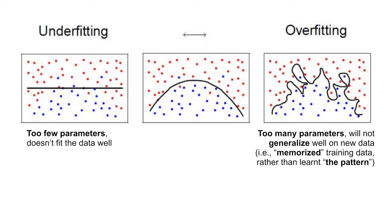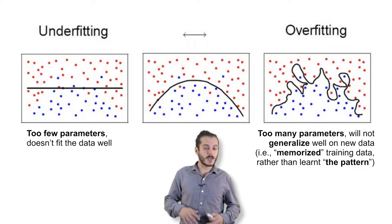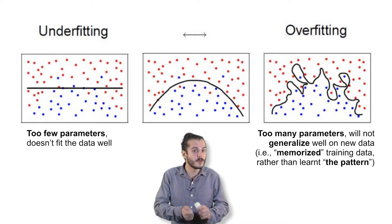One extreme, called underfitting, arises because the surface that the model finds doesn't capture the shape which actually divides the two classes. Often this happens because the model has too few parameters. It has too few knobs to adjust, and so it's limited in the kind of surfaces it can find.